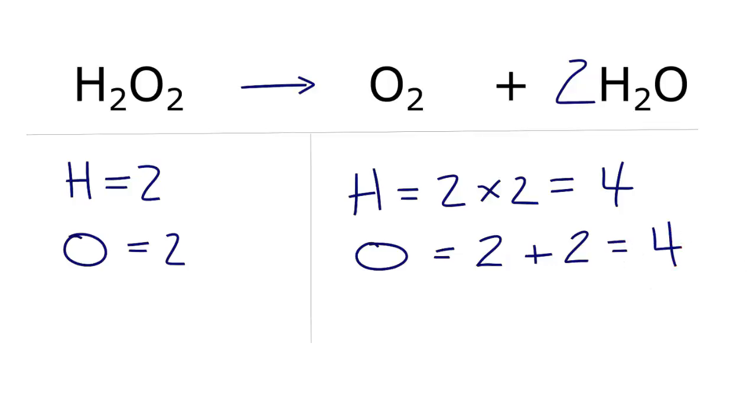So now we have an even number, that's going to help us out. Let's go back to the reactant side. We have two hydrogens and two oxygens, and we want both of those to be four.